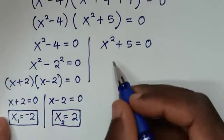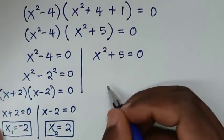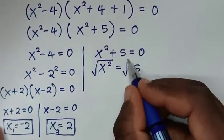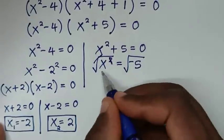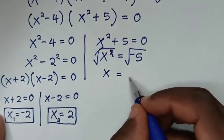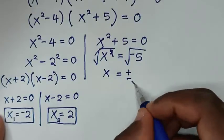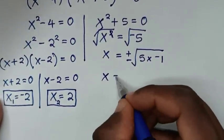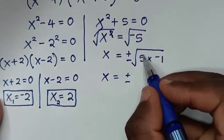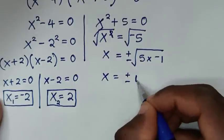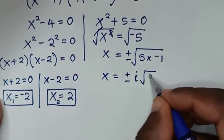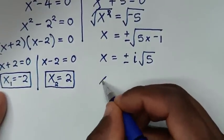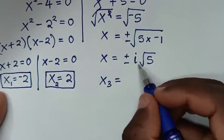Continuing from the second solution x² + 5 = 0, taking 5 to the other side gives x² = -5. Taking the square root: x = ±√(-5), and since √(-5) = √5 × √(-1), and √(-1) = i, we get x = ±i√5. The third value of x is i√5.